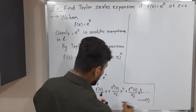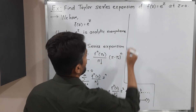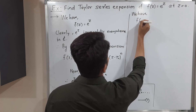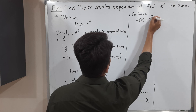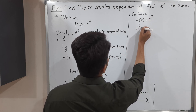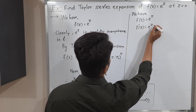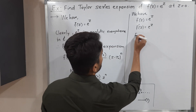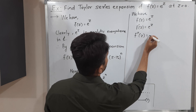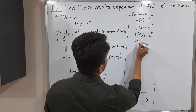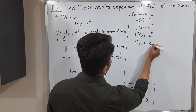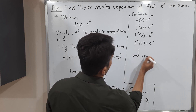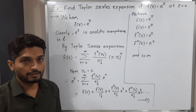Let us find all those derivatives one by one. The function is f(z) = e^z. The first derivative f'(z) — you know that the derivative of the exponential function is the same, so f'(z) = e^z. The second derivative is also e^z, the third derivative is also e^z, and so on. In this way we find all higher derivatives.